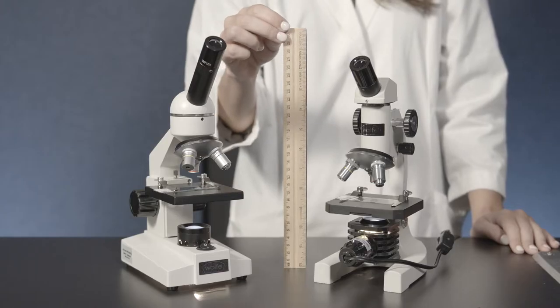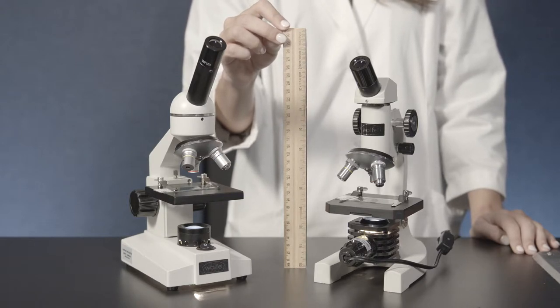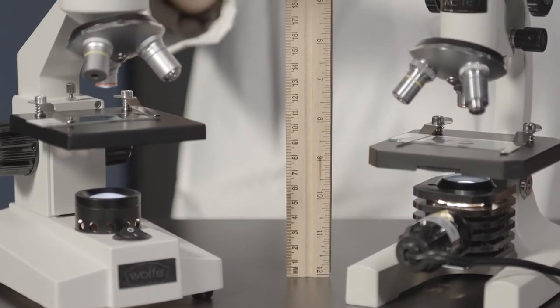Traditional compound microscopes that are designed for students in lower grade levels are usually referred to as three-quarter-sized microscopes. The lighter weight and smaller size, usually about 11 to 12 inches high, are easier for younger users to handle.